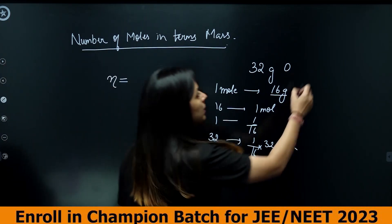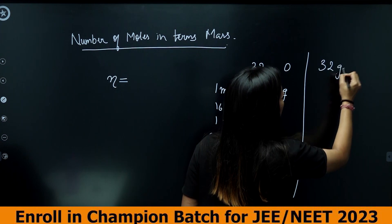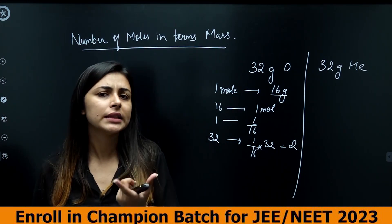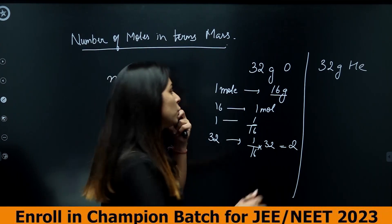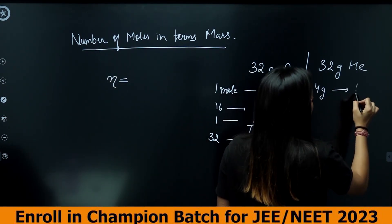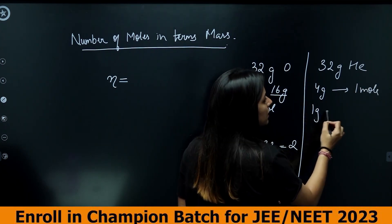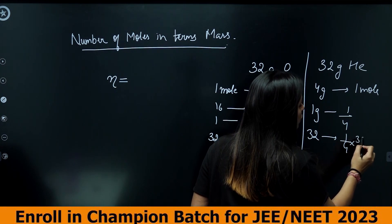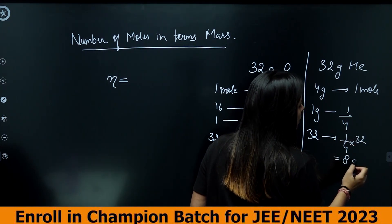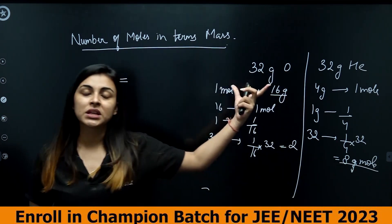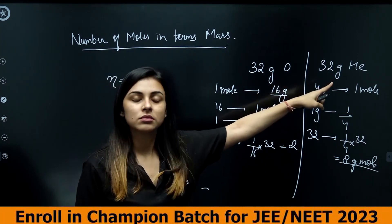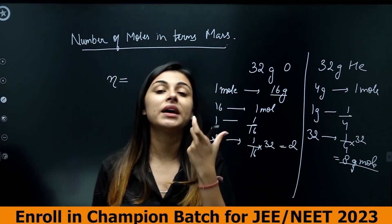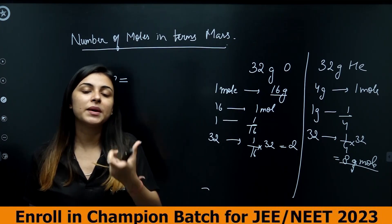Let's try helium. If I have 32 grams of helium, the molar mass of helium is 4 grams per mole. So using unitary method: 1/4 × 32 = 8 moles. So 32 grams of helium gives 8 moles. As you can see, the reference value changes depending on which element we are calculating moles for.